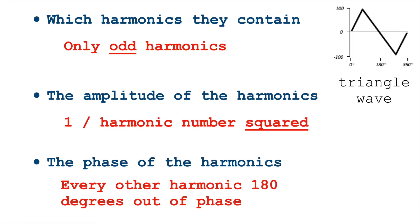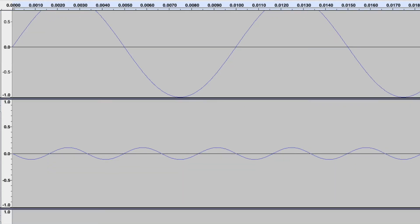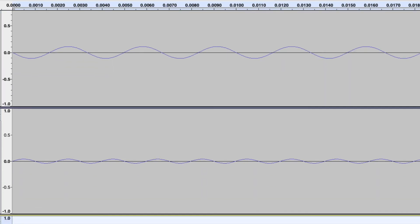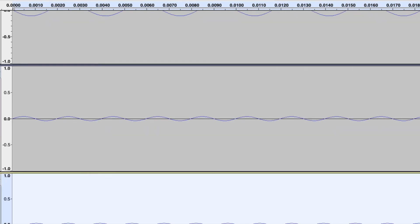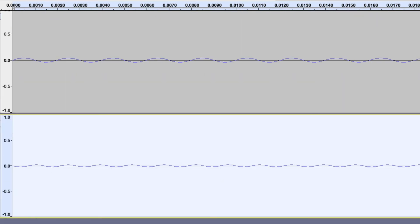In the triangle wave too, every other harmonic is 180 degrees out of phase. So again, if your fundamental starts by going towards high pressure, your third harmonic is going to start by going towards low pressure, fifth high, seventh low, etc.